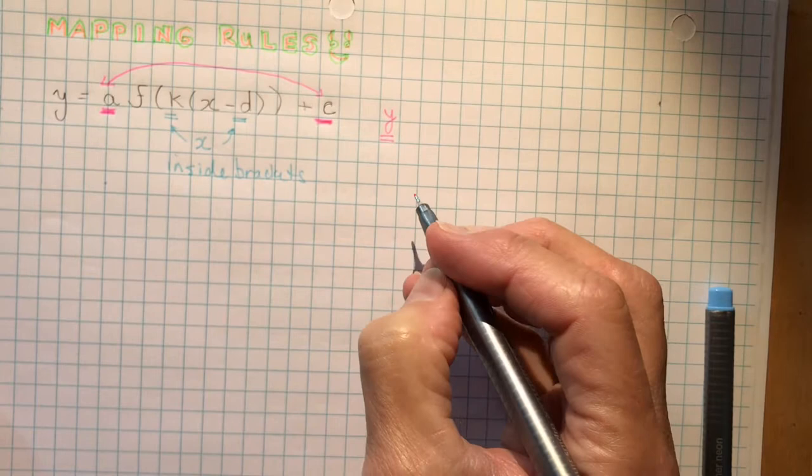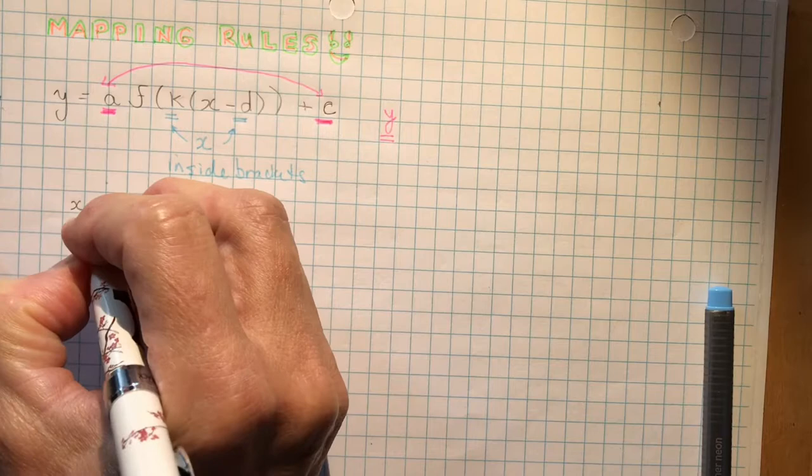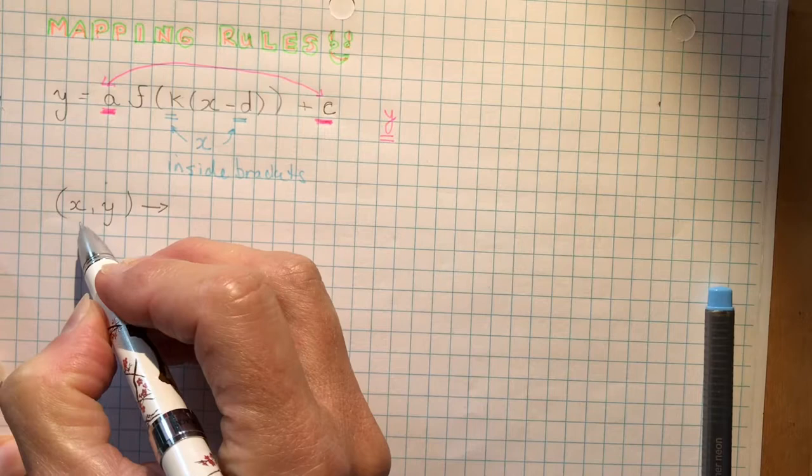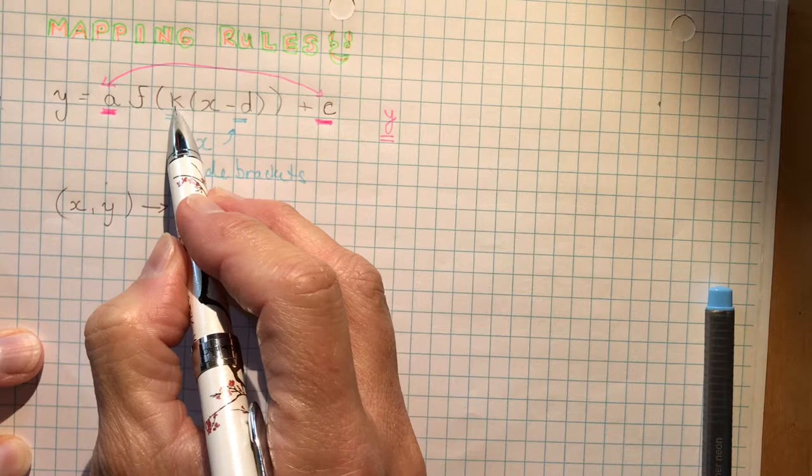So if I have a basic coordinate, and I know your textbook asks you to do this a number of times, it'll say, what happened to X and Y under this transformation? So we write it like this. We say the coordinate X, Y will be mapped onto, and I see here what changes X, what changes Y. So the K changes X, and so does the D.